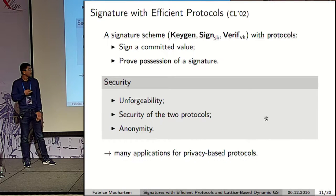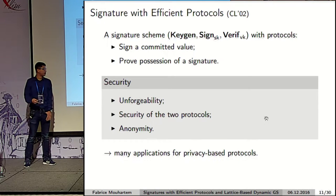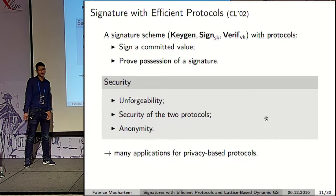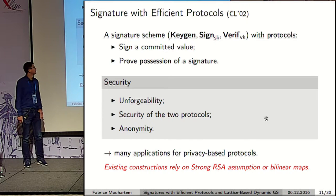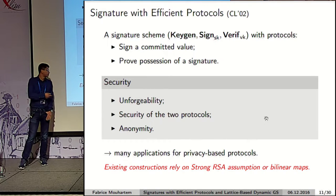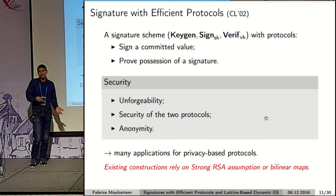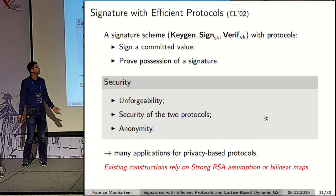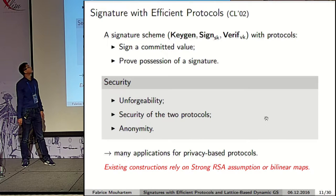From this primitive, we have many applications in privacy-based cryptography as we saw before. We also note that all existing constructions rely on the strong RSA assumption or bilinear maps, which is why we want to build it from lattices.